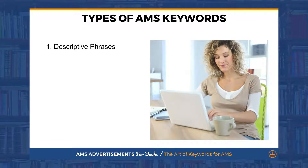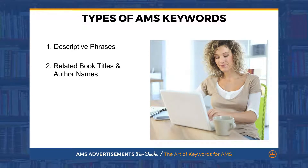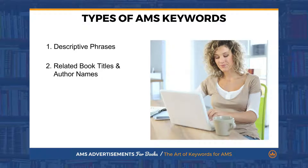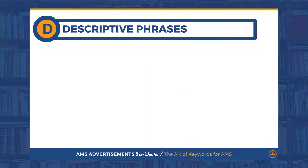The first type is descriptive phrases — words that people use to describe the book or what they're looking for. The second is related book titles and author names — names of books that are related to your book. Think about how you shop: sometimes you know exactly what you're looking for and type in the book title or the author name, but sometimes you're just looking for a certain subject or solution and describe what you're looking for. That's exactly what our shoppers are doing on Amazon, and for our AMS ads we need to capture both opportunities. Our sponsored product ad keyword list needs to incorporate both types of keywords so as to adequately attract the right market.